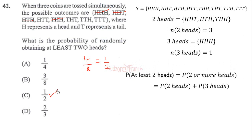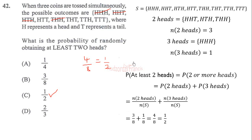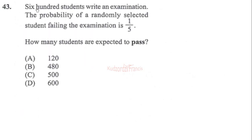That working I just explained is the full method. You can simply count: at least two heads means two heads appearing — count all such outcomes, then express over the sample space, and that gives your answer of one over two.